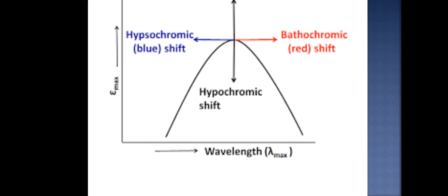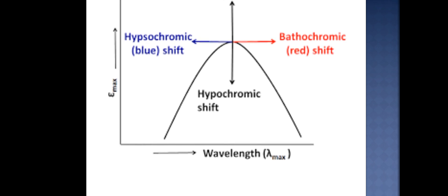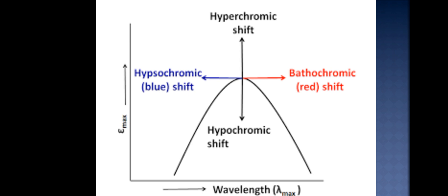The decrease in the intensity of the radiation is called hypochromic shift. Increase in the intensity results in hyperchromic shift. Increase in the wavelength results in bathochromic or red shift. Decrease in the wavelength results in hypsochromic or blue shift.